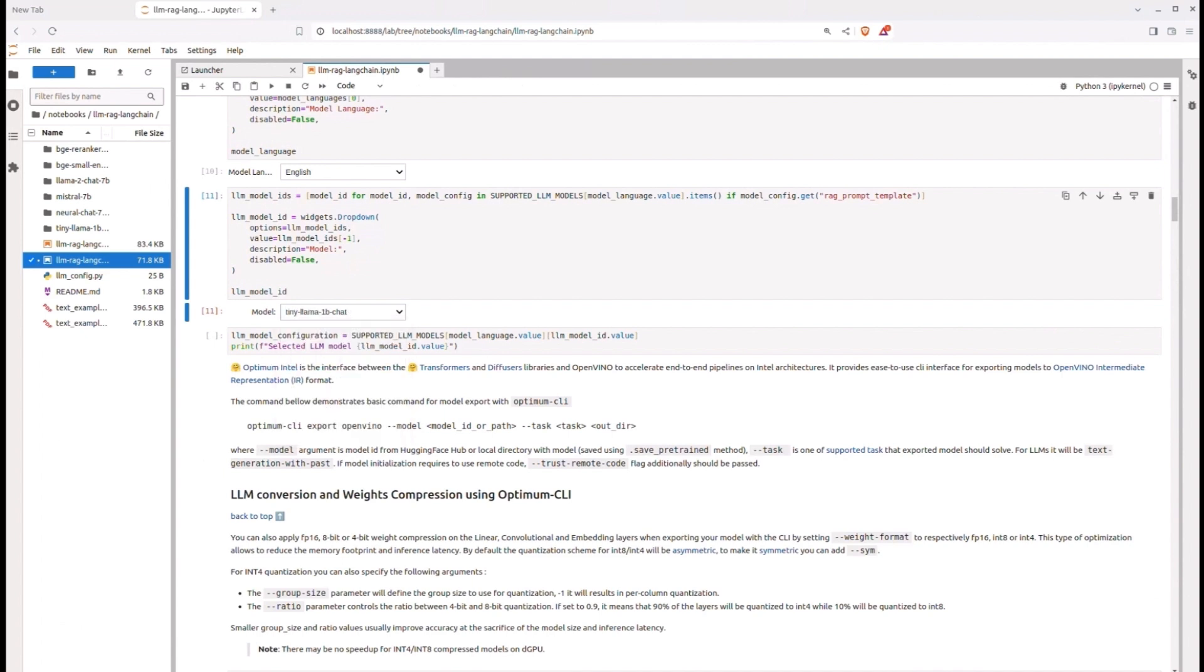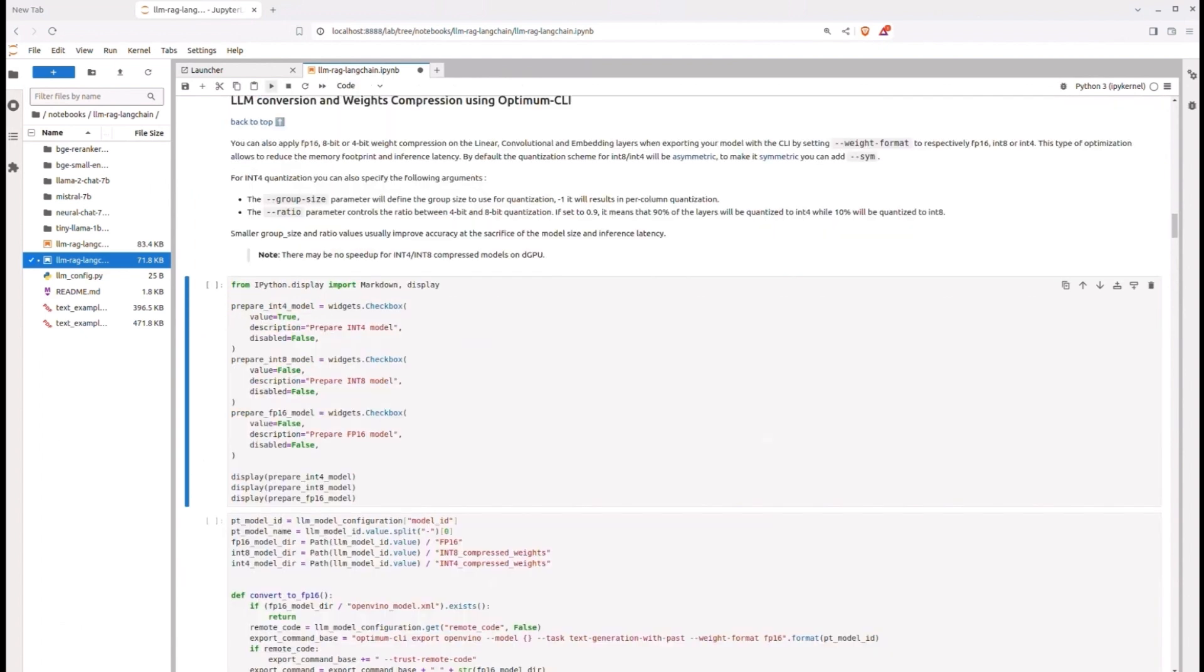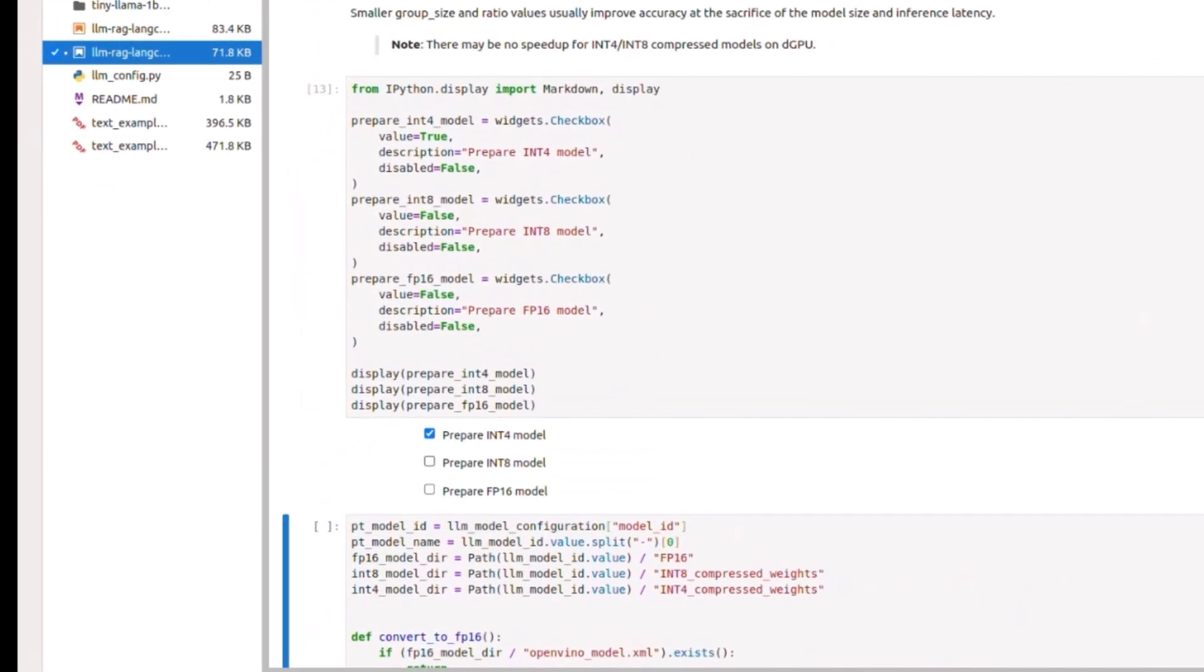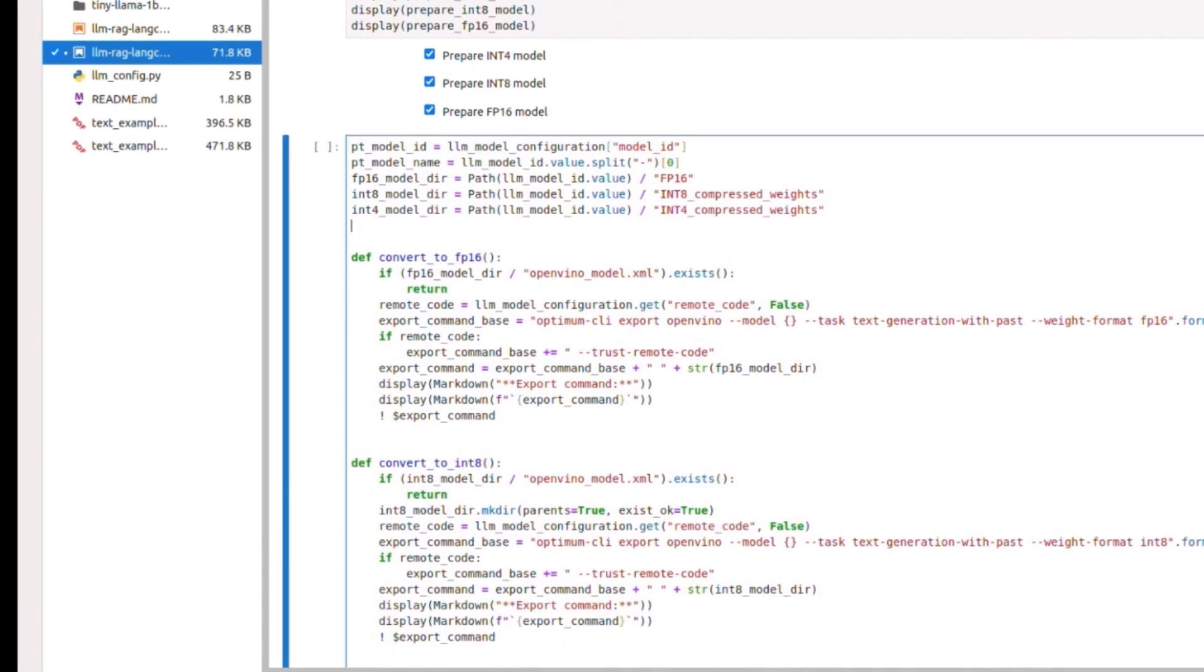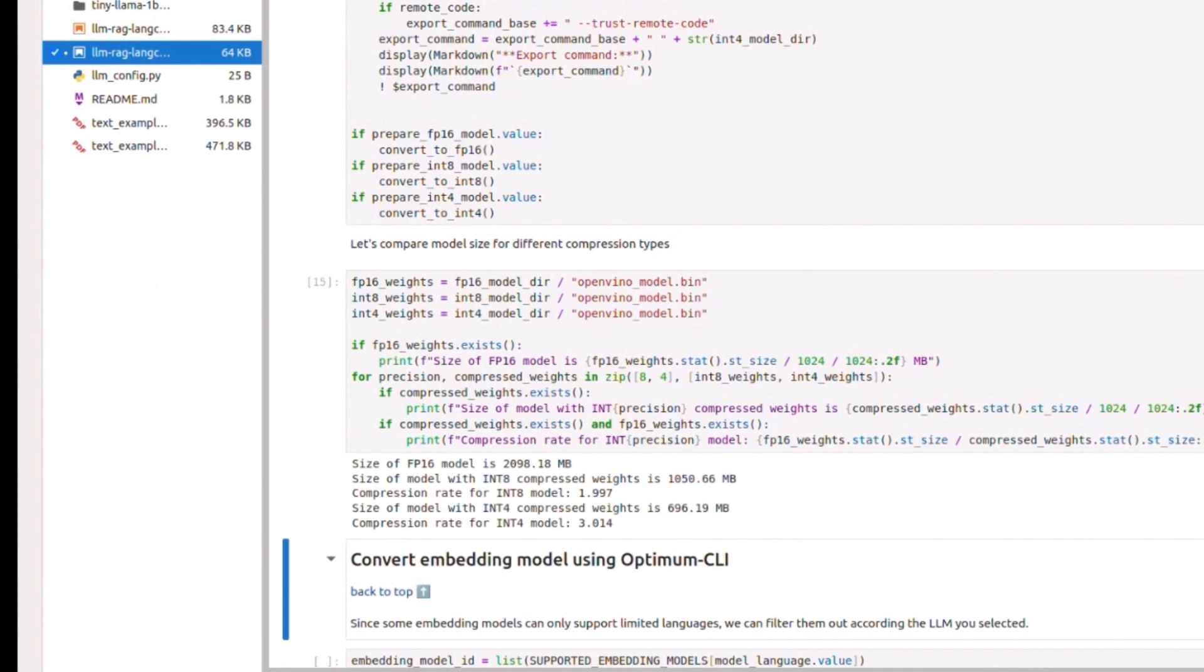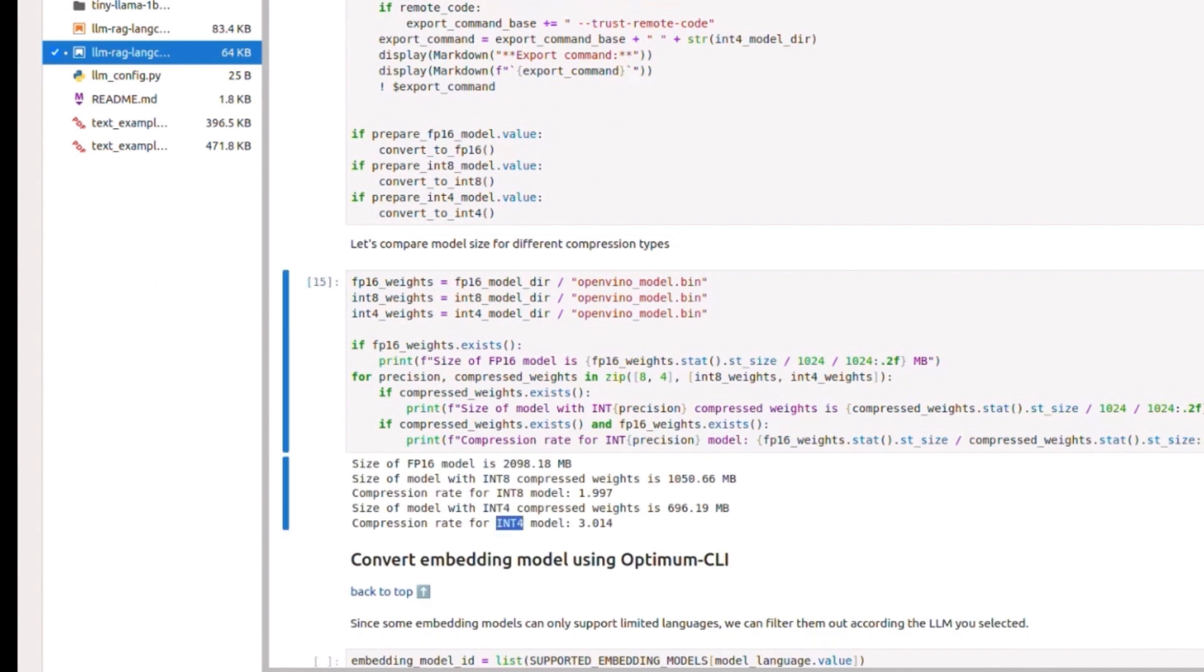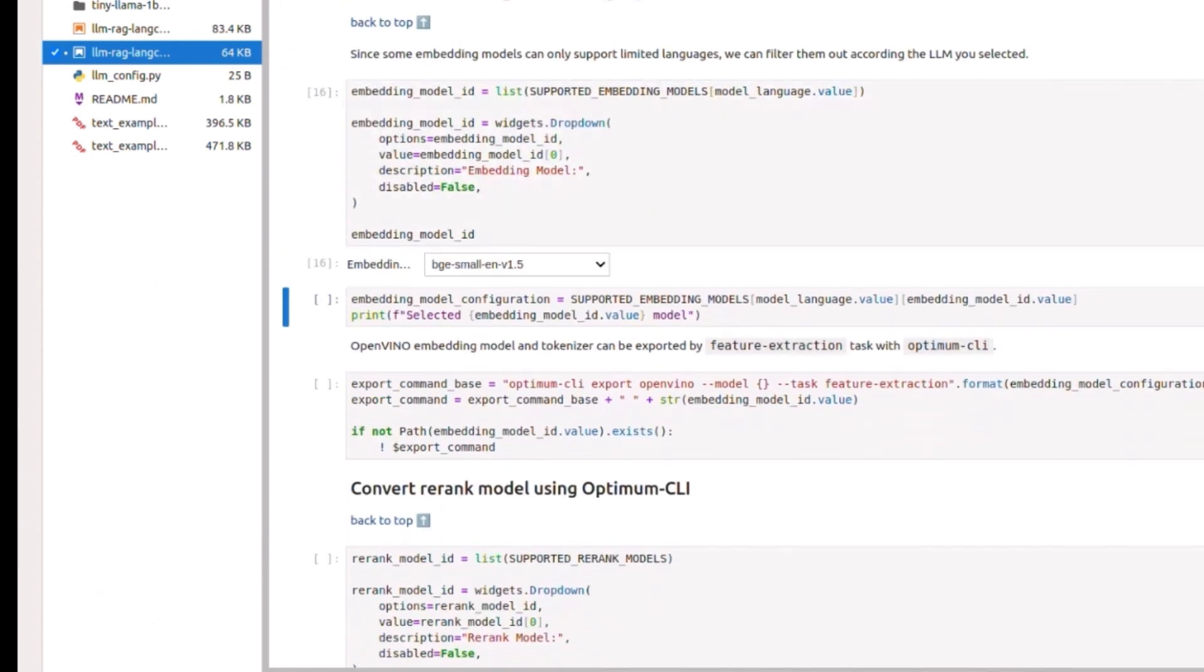And here is a cool thing, we can compress the model weights to FP16, INT8 or even INT4. After we run the compression, you can see how the model shrinks in size when you move from FP16 to INT8 or INT4.